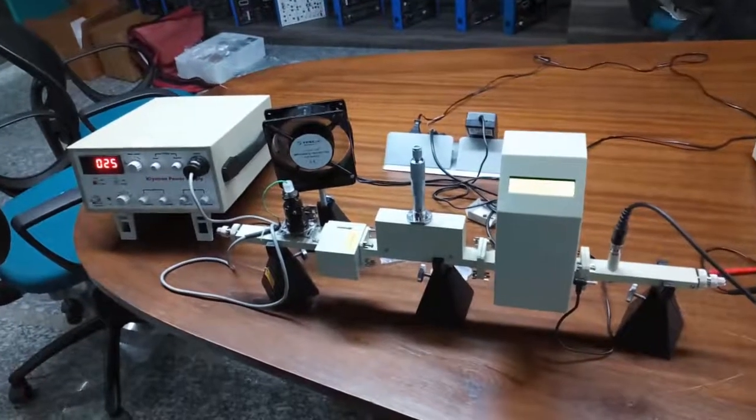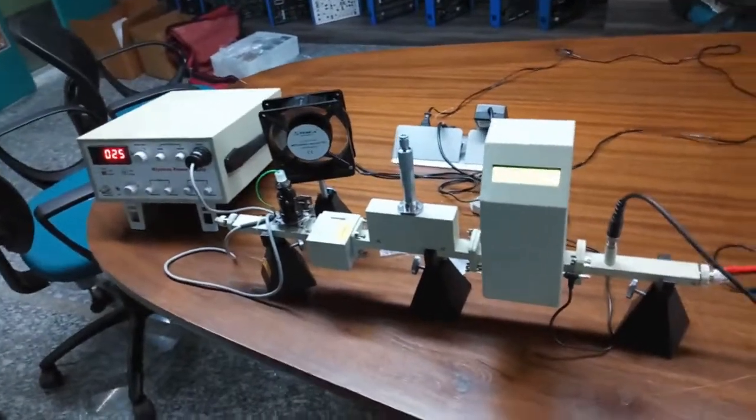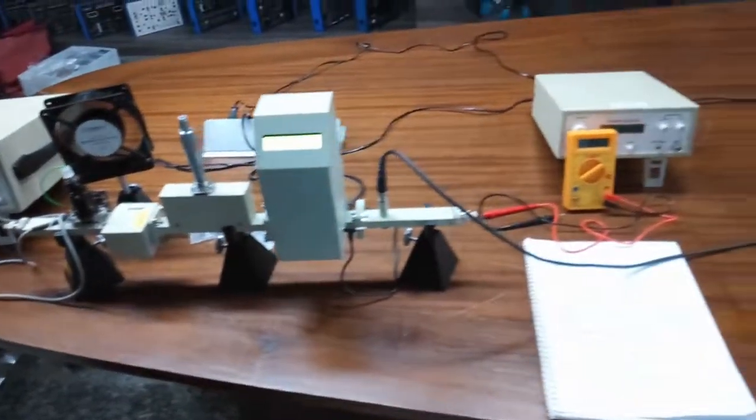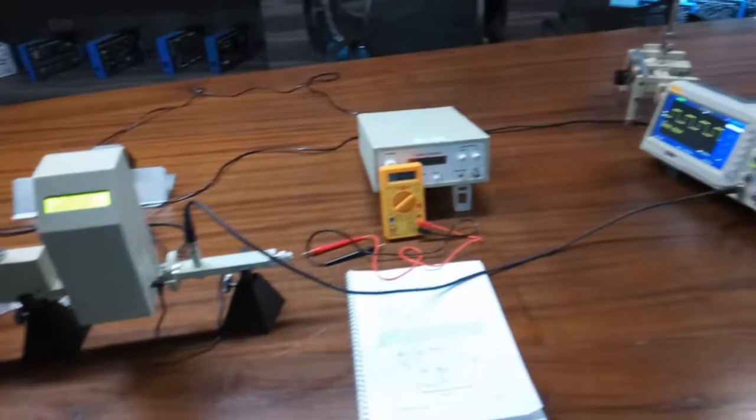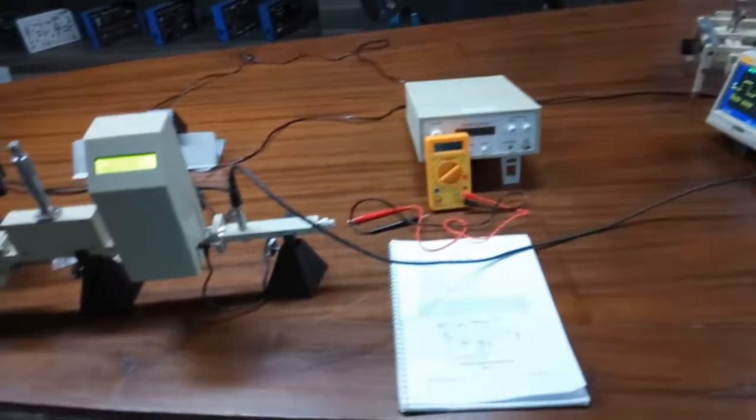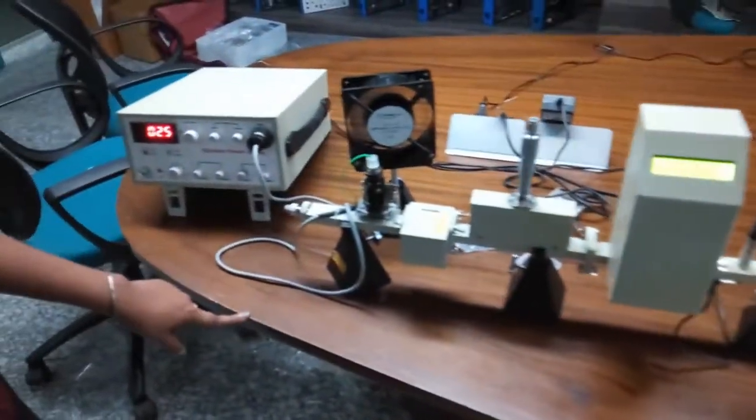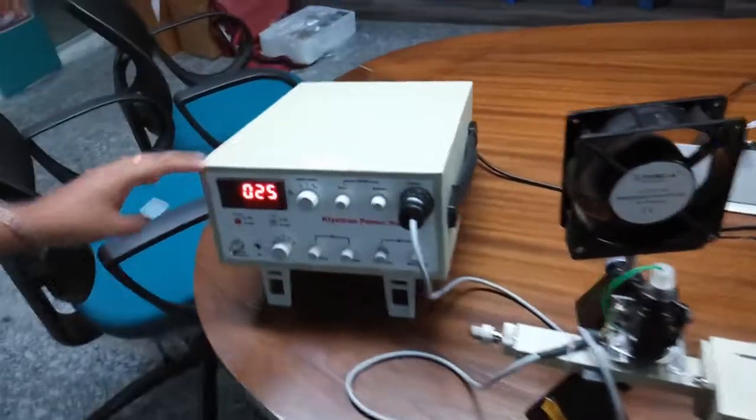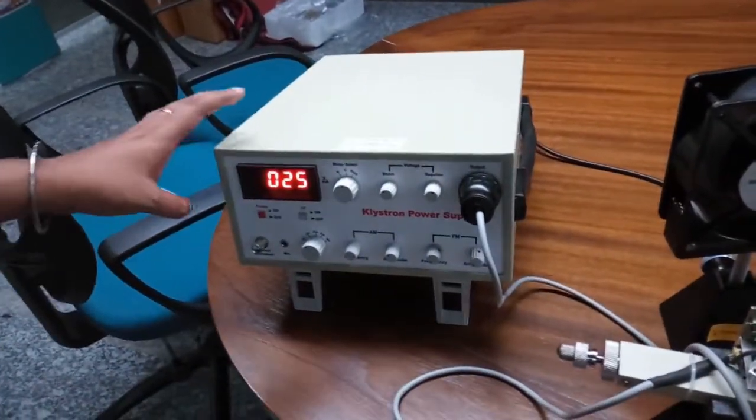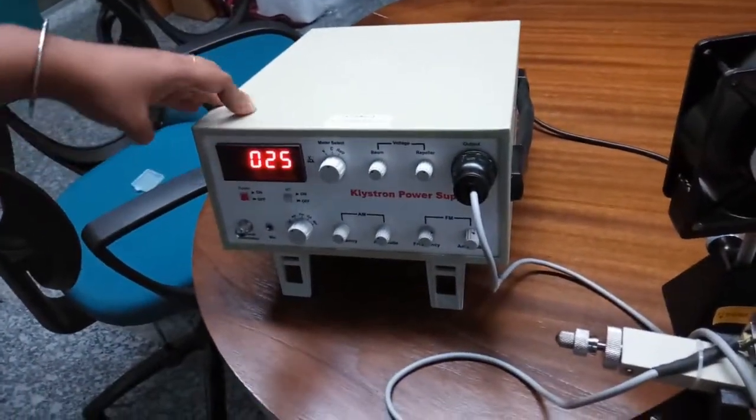This is the setup for study of characteristics of the reflex klystron tube and its electronic tuning bench. What we have set up is this microwave test bench. Now make sure that the current does not exceed above 25 milliampere.